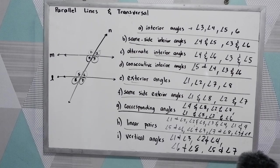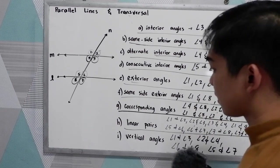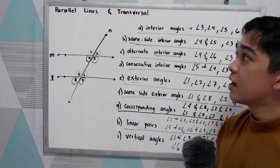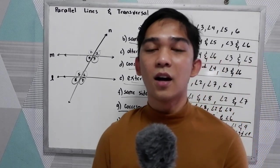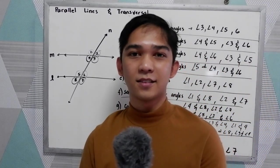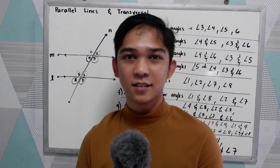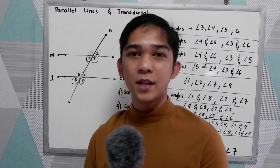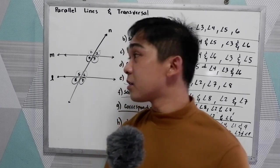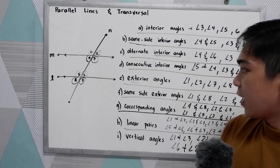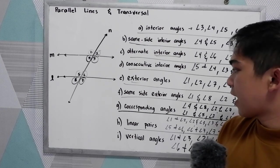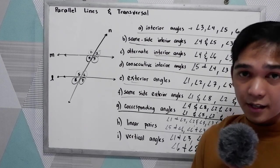So those are the interior angles, linear pairs, and vertical angles for parallel lines cut by a transversal. The next video will cover the theorems about exterior angles, corresponding angles, linear pairs, and vertical angles.